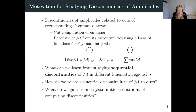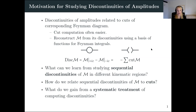The motivation for studying discontinuities is that discontinuities probe the analytic structure, but can also be related to cuts of the corresponding Feynman diagram. The cut computation is often easier. As Enrico discussed, we can then reconstruct the full amplitude using information about its discontinuities if we have a basis of rational functions for our finite integrals. The questions we've been trying to ask are: what we can learn from studying sequential discontinuities of amplitudes, and how we relate these sequential discontinuities to cuts. We also saw that it's necessary to put these discontinuities on a firmer mathematical ground.